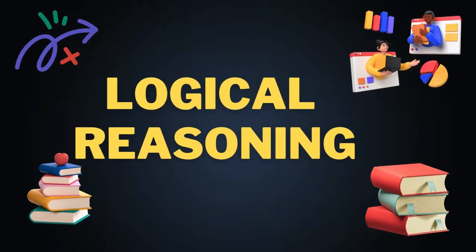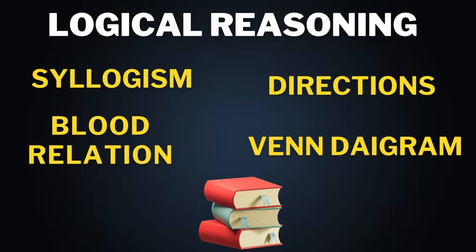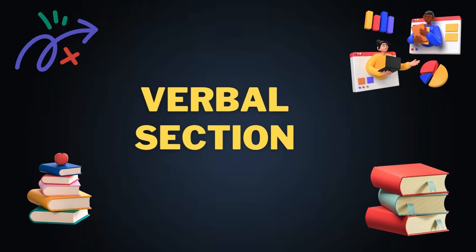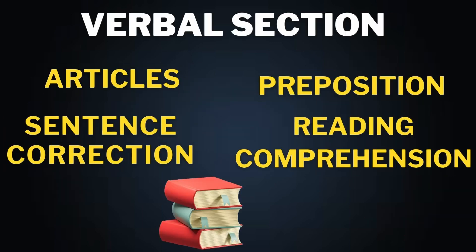The second part is logical reasoning, which contains topics like syllogisms, blood relations, directions, and Venn diagrams. This part is more observational in nature. The third part is verbal, which mainly contains reading comprehension and English grammar, such as sentence corrections, articles, and prepositions.